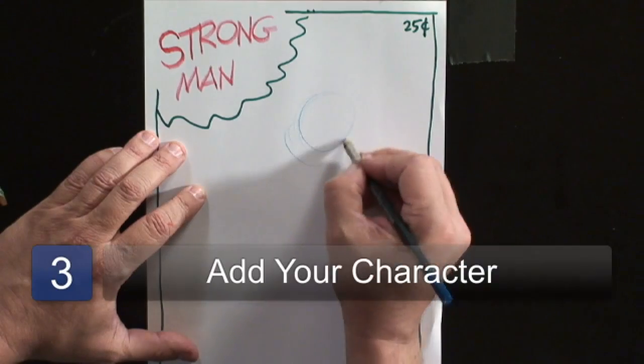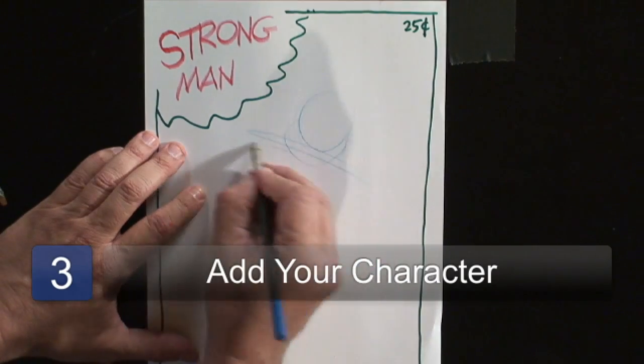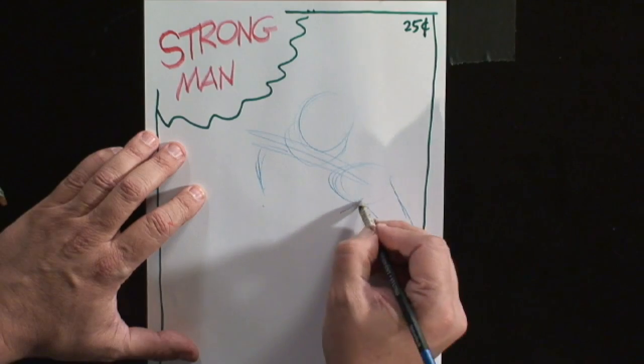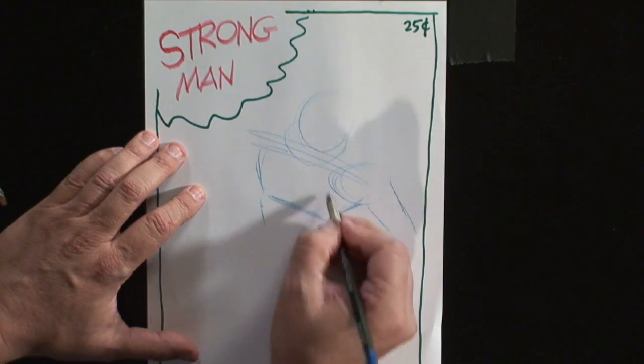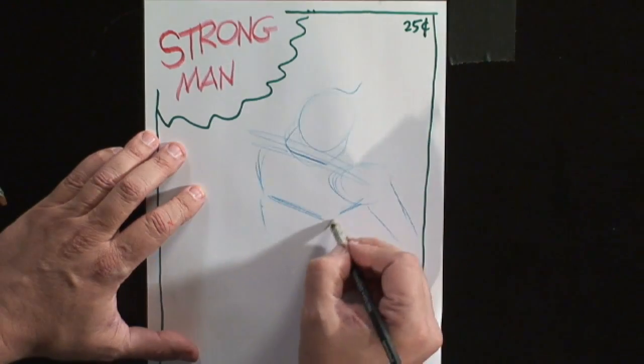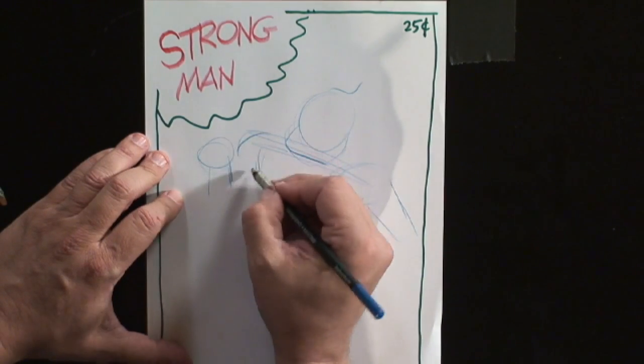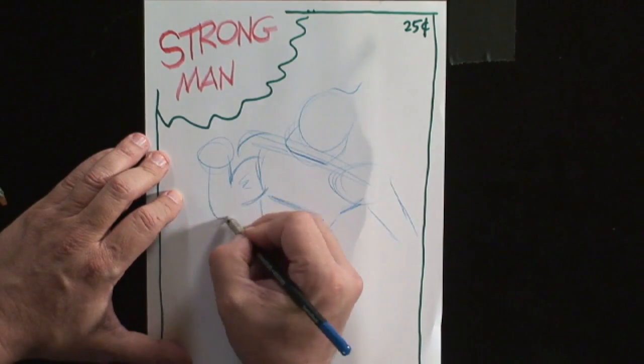Then we're going to put our character that we've made up, who is Strongman. He's a guy that is very muscular, obviously, and I'm going to have him standing on the earth and flexing, which is very important.